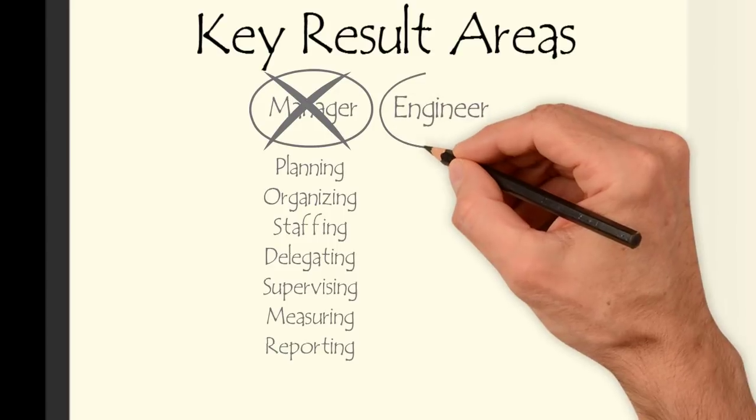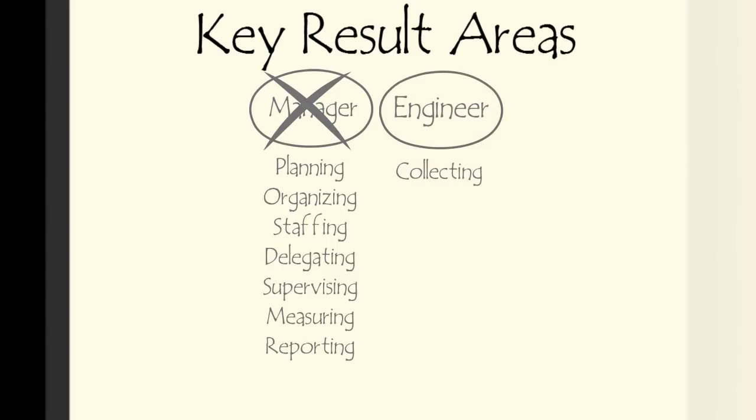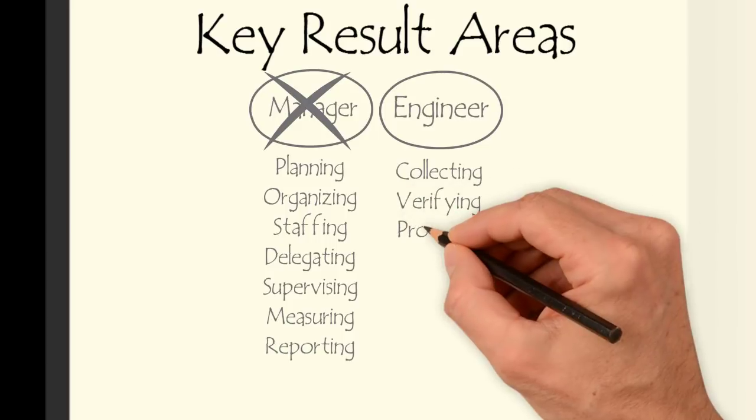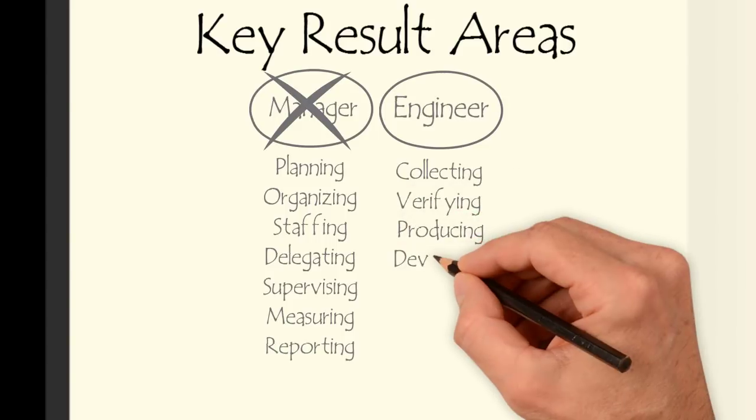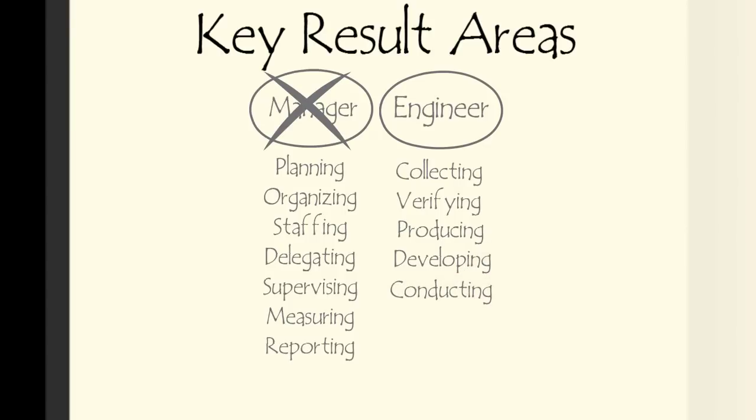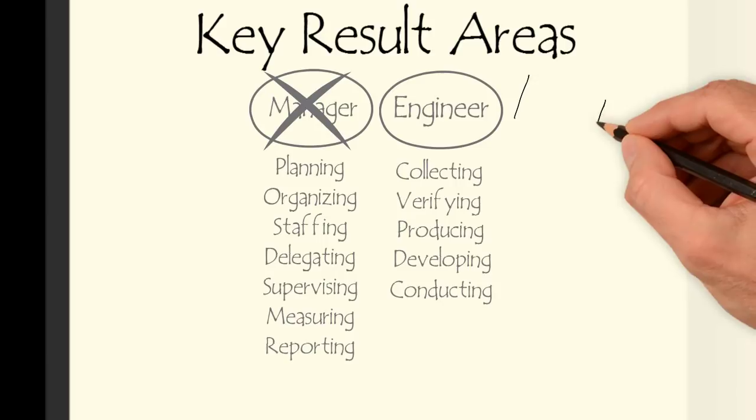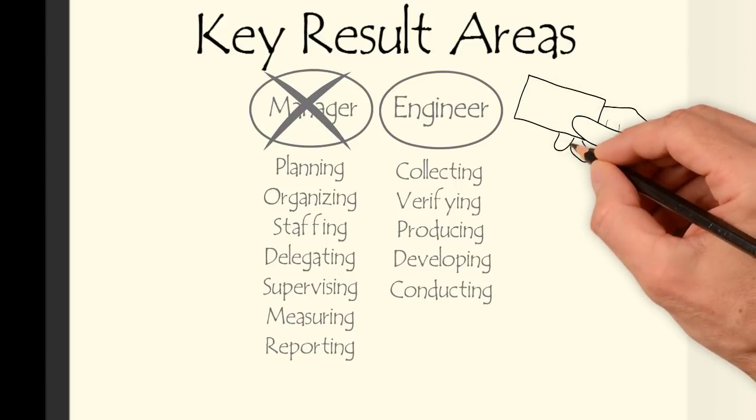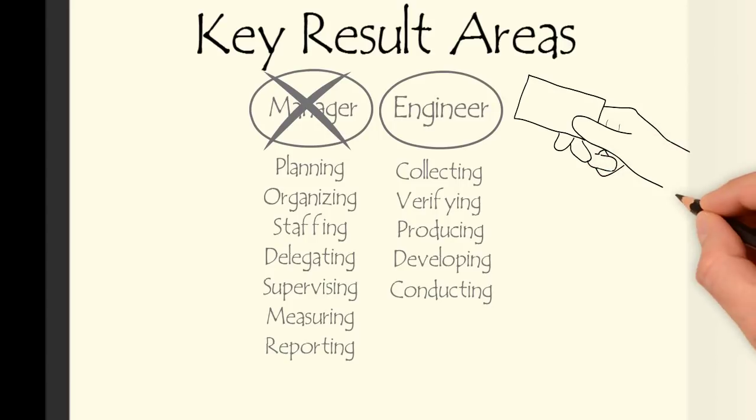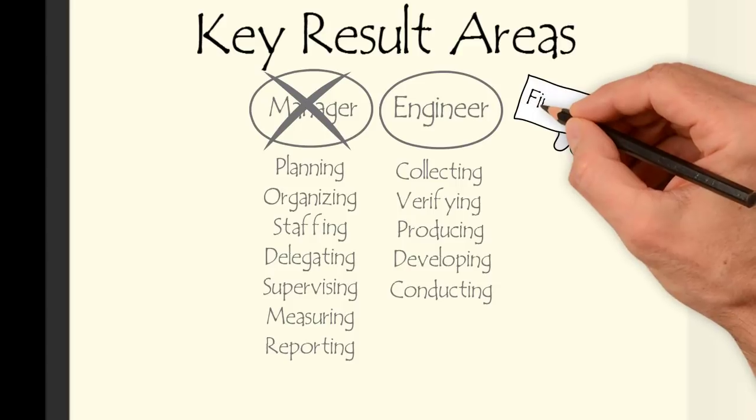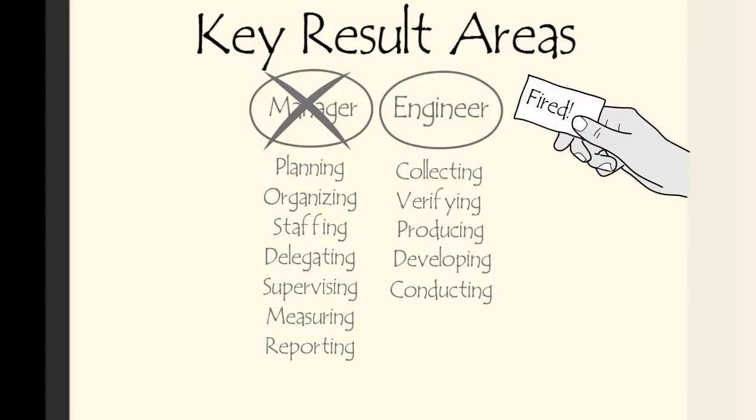As an electrical engineer, my key result areas were collecting data from the construction site, verifying engineering calculations, producing engineering design drawings, developing construction checklists, and conducting design review meetings. A lack of results in any of these key result areas would have held me back from receiving promotions and getting more opportunities in that role. A complete failure to perform in any one of these key result areas would have quickly led to my termination as an electrical engineer within the company.